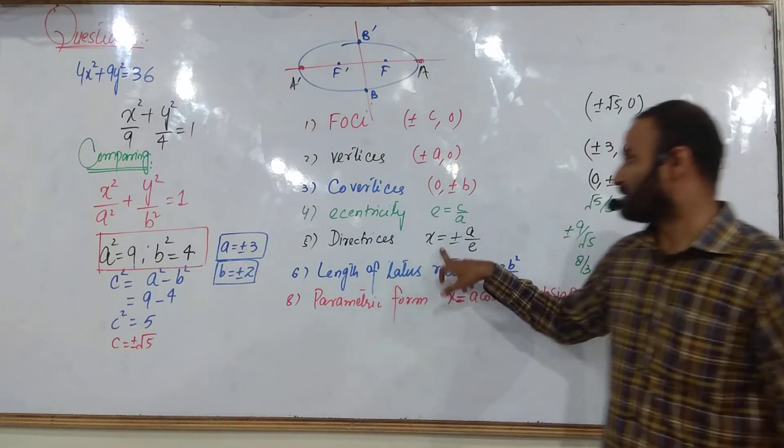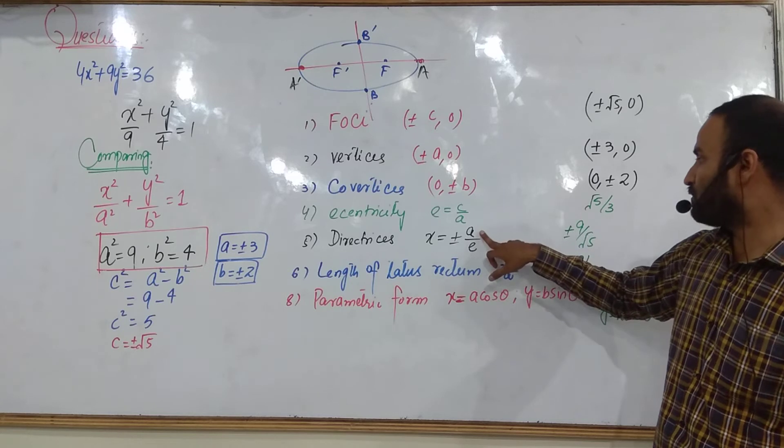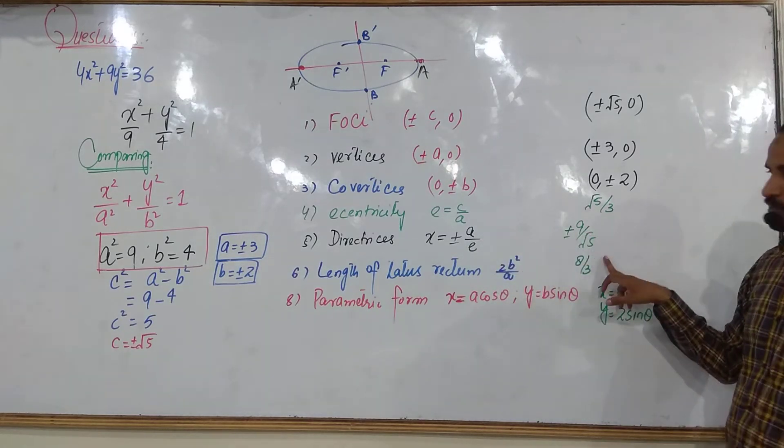In that case, x is equal to ±A²/C, the value of A. You will get ±9/√5.